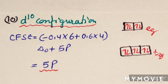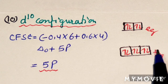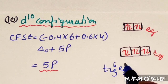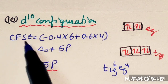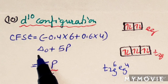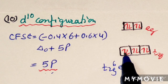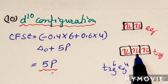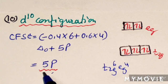For D10 configuration, the electronic configuration is T2G6EG4. The delta O contribution becomes zero because (0.6 × 4) − (0.4 × 6) = 0. So CFSE = 5P — only pairing energy contributes, with no delta O term.